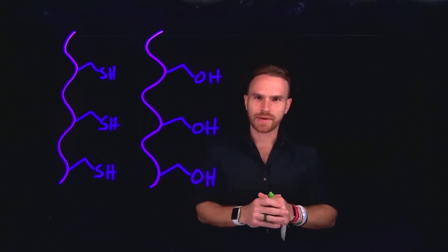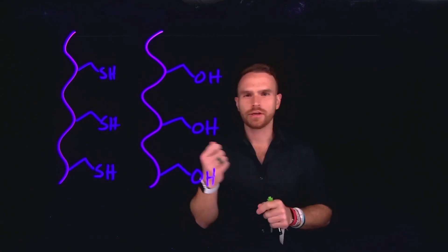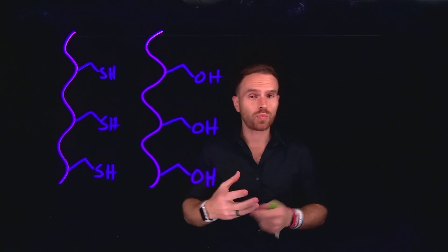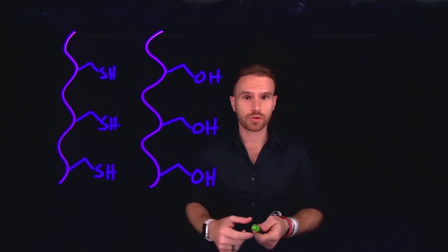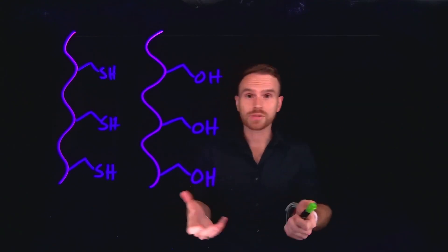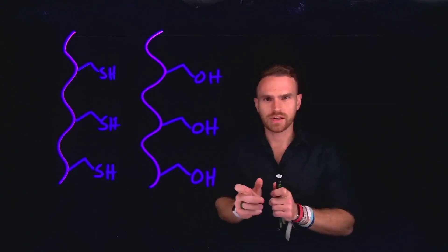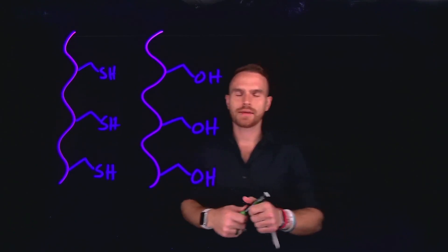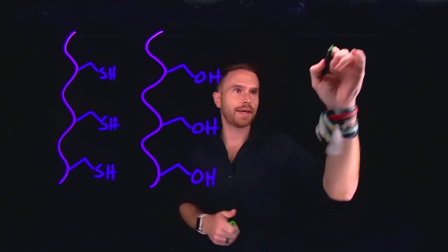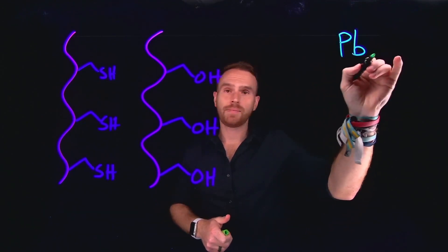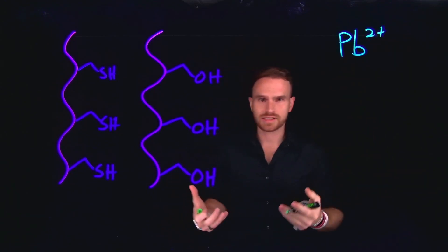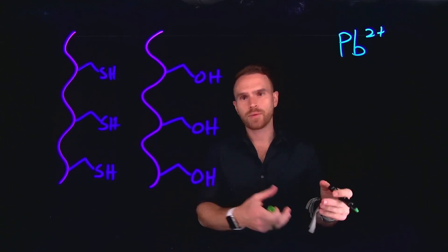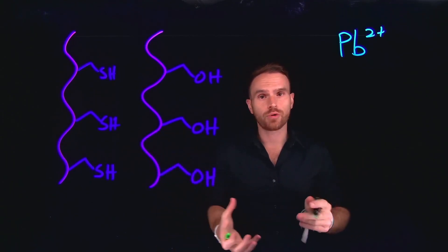Even though HSAB theory is not a quantitative approach — we're not assigning numerical values to hardness or softness — it can be harnessed to do useful things like separations chemistry and also helps explain what is poisonous to us. For example, suppose you had water containing lead (Pb²⁺) and you were trying to pass it through a filter to completely remove the lead.